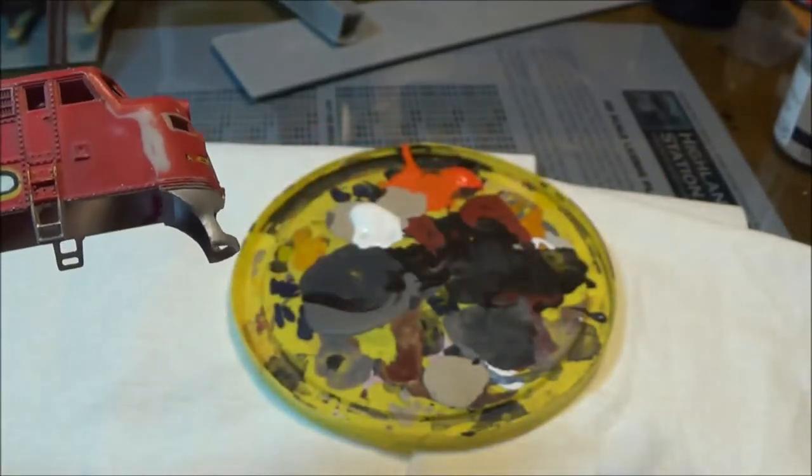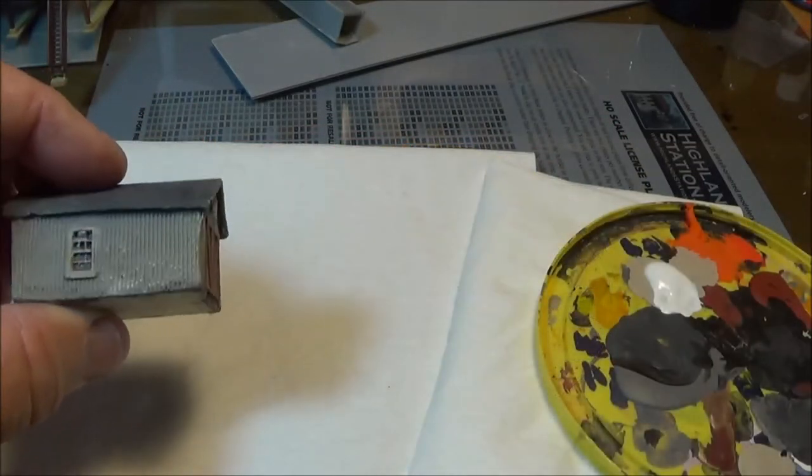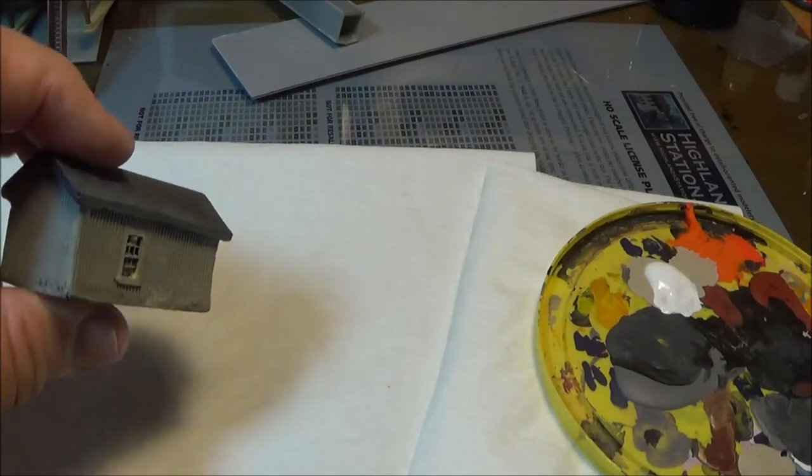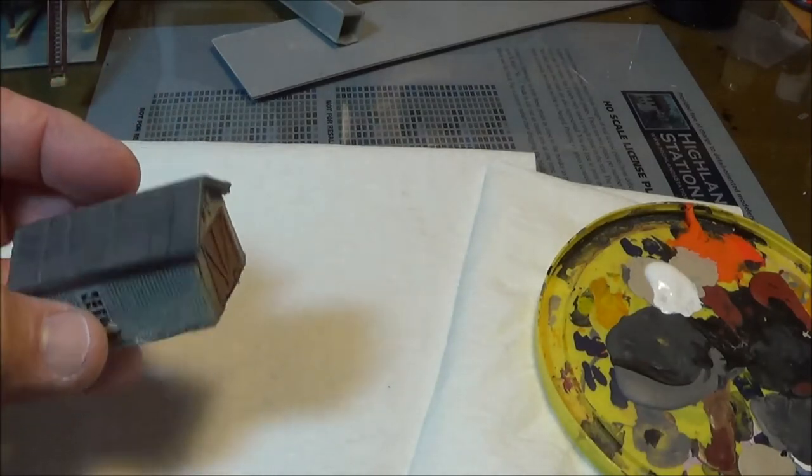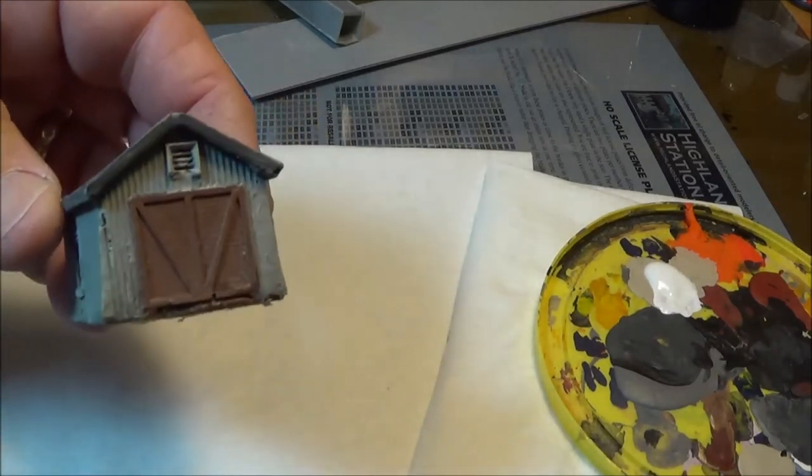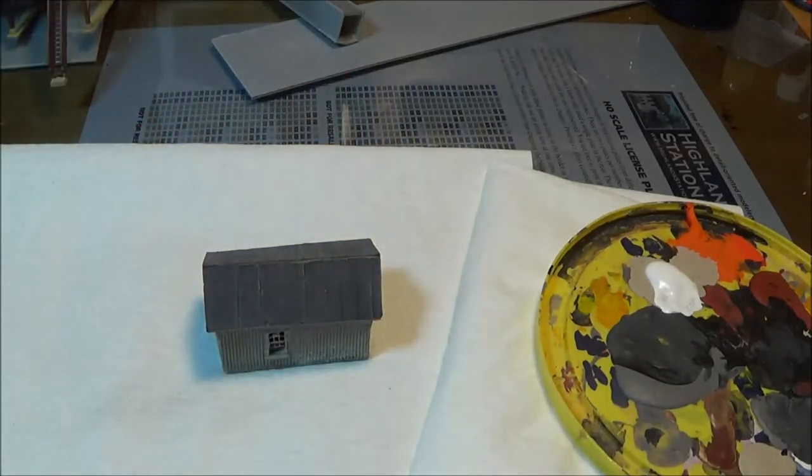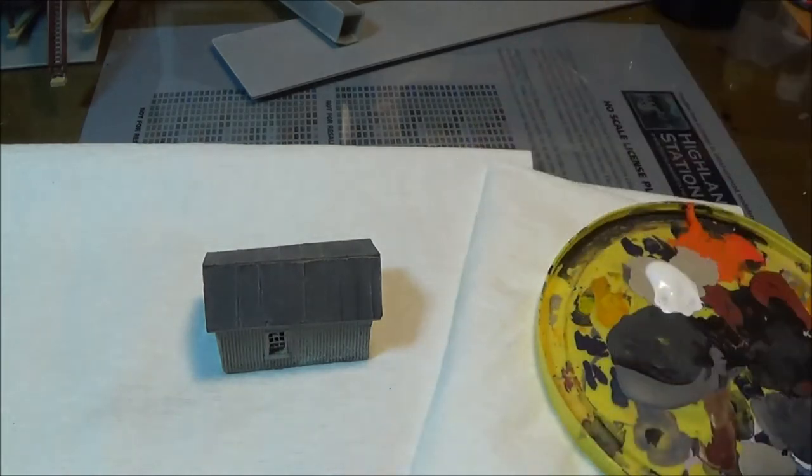Let's try a small building. Okay, here's a small shed, a Model Tech Studios cast little shed. And while it is weathered and painted and looks pretty good, we're going to bring out some of the highlights on it by dry brushing. And because it's a dark building, I'm going to go with my darker gray.